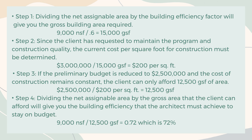Step 3: If the preliminary budget is reduced to $2,500,000 and the cost of construction remains constant, the client can only afford 12,500 gross square feet. $2,500,000 divided by $200 per square foot equals 12,500 gross square feet. Step 4: Dividing the net assignable area by the gross area the client can afford gives the building efficiency the architect must achieve to stay on budget. 9,000 net square feet divided by 12,500 gross square feet equals 0.72, which is 72%.